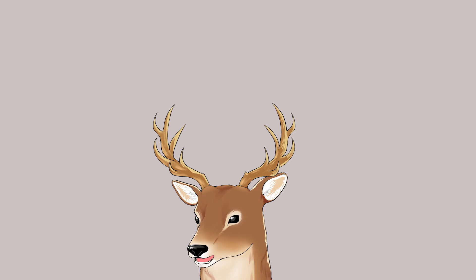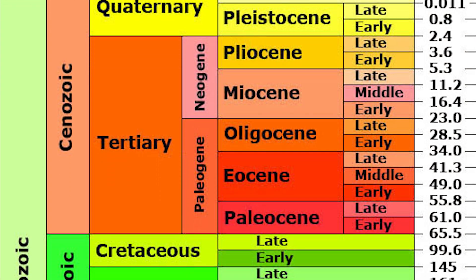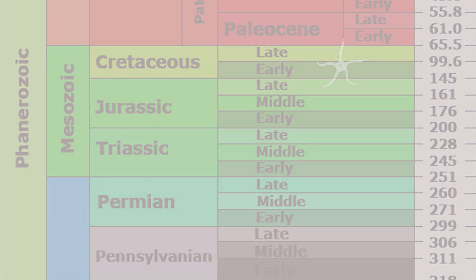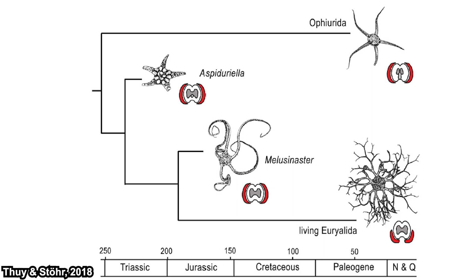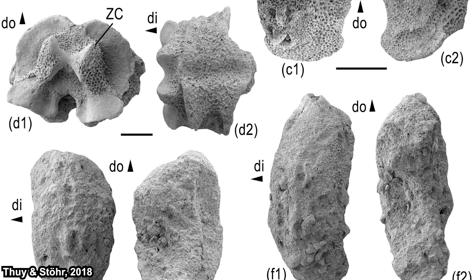Their branching arms are an evolutionary mystery because not all members of their family have branching arms, and some species in the Euryalida order also have a similar body form. Molecular clocking and fossil records indicate the Euryalida order diverged in the Cretaceous. A 2018 publication describes two fossils: Aspidura from the Triassic and Melusinaster from the Jurassic, which show the transition from typical ophiuroid morphology to euryalid morphology.